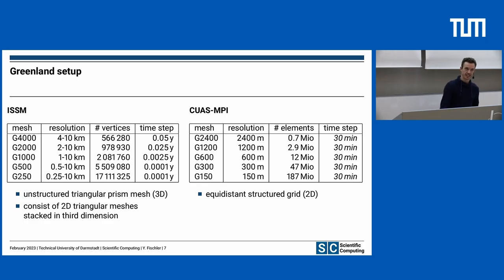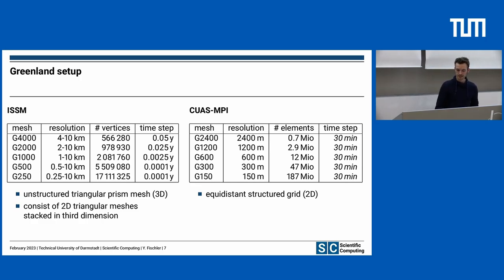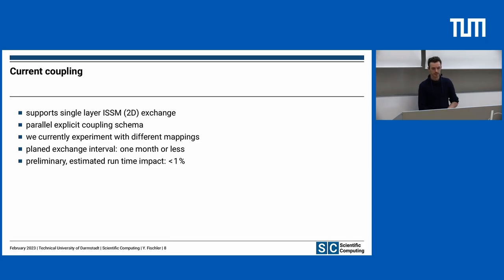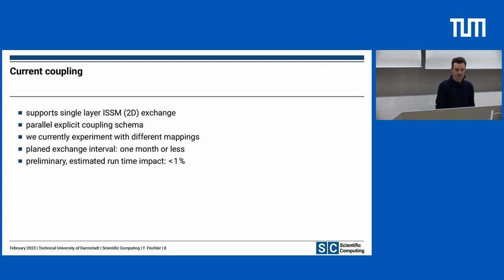To give an idea about the time steps we are using, calculations are most likely done in years. For ISSM this is approximately one hour, and in CUAS-MPI we use 30 minutes at the moment, though these time step sizes may change as CUAS-MPI is a pretty new code. Our current coupling supports single-layer exchange, so we only couple a 2D view of ISSM to another application. This is sufficient for CUAS-MPI as well as for the data exchange Daniel wants to do. For CUAS-MPI we also use a parallel explicit coupling scheme.